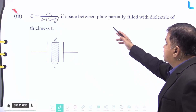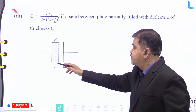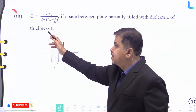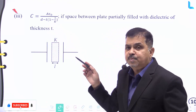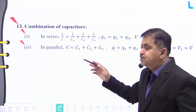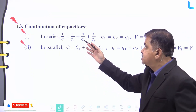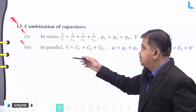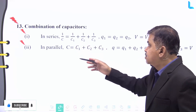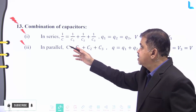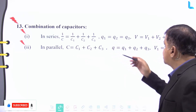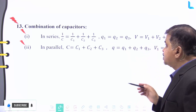If the space between the plates is partially filled with a dielectric of thickness t, the capacitance is C = ε₀·A / (d − t·(1 − 1/k)). Number thirteen: for capacitors connected in series, the equivalent capacitance is given by 1/C = 1/C1 + 1/C2 + 1/C3, where the charges satisfy q1 = q2 = q3 and the potential satisfies V = V1 + V2 + V3.